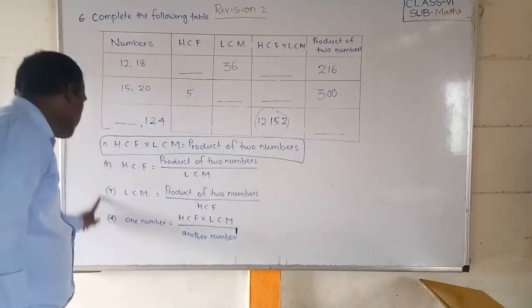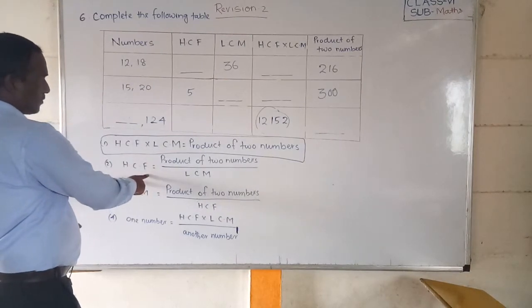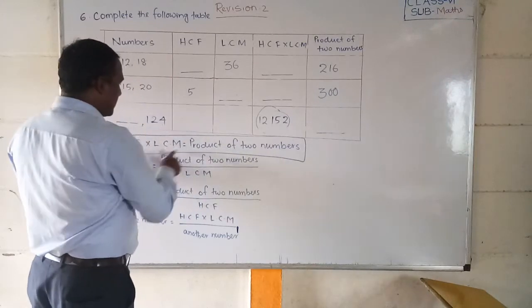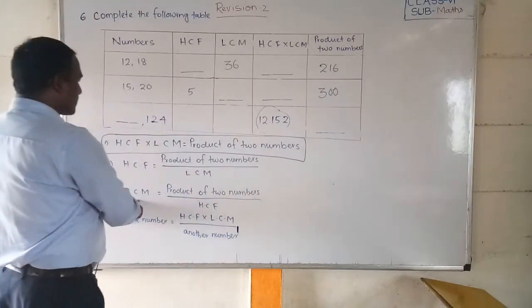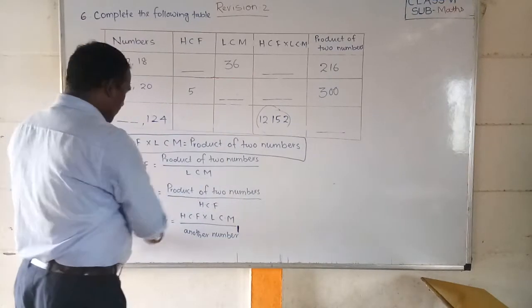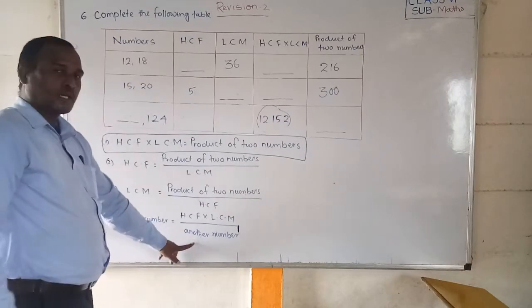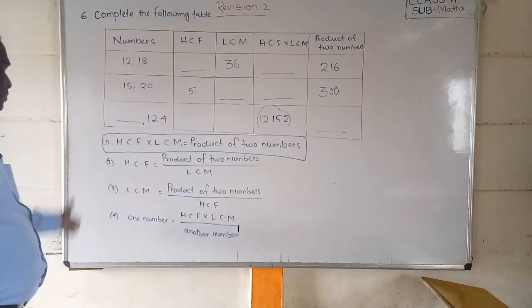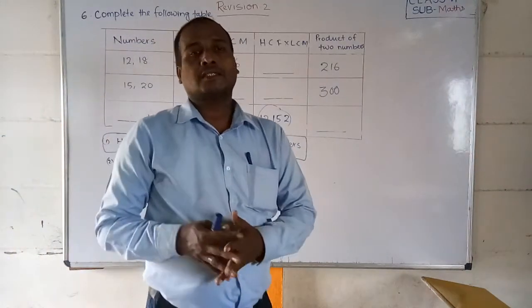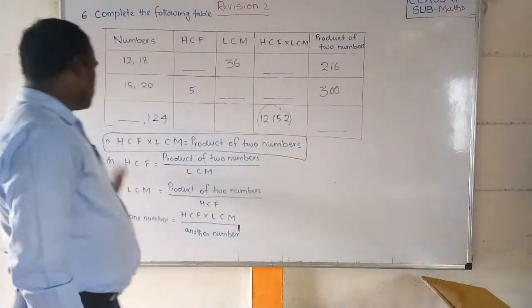From this main formula, we can derive: if we need to find HCF, then HCF is equal to product of the two numbers divided by LCM. If LCM is asked, LCM is equal to product of the two numbers divided by HCF. If one number is asked, it equals HCF into LCM divided by the other number. These four formulas you have to remember to solve these problems.